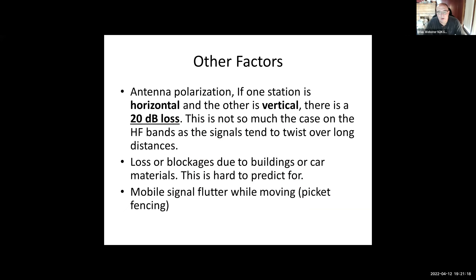Losses due to buildings and materials are harder to predict. On two meters and 440, it's nowhere near as bad as microwave or millimeter wave. At five gigahertz, it only takes 60 feet of tree canopy in an RF path to seriously impact the signal. At 32 or even 24 gigahertz, a simple leaf can block the signal. Losses for trees and such are not as significant for this drill, though.